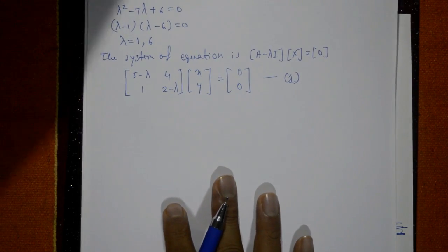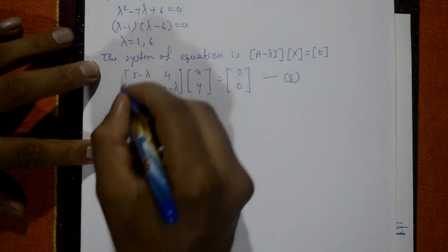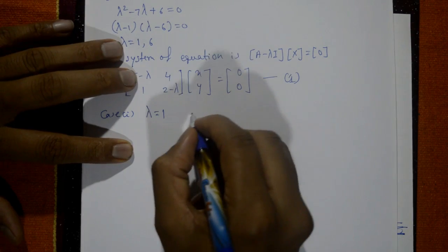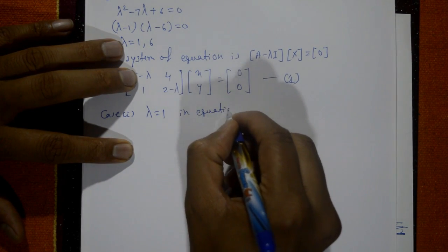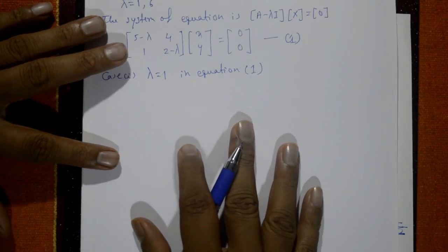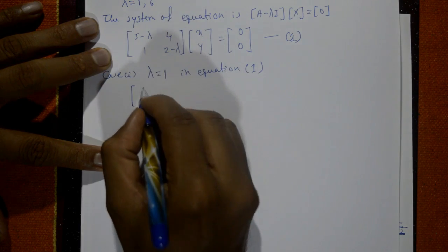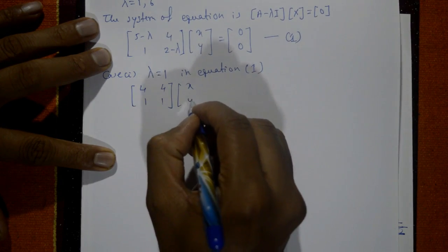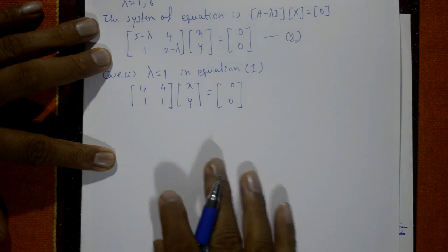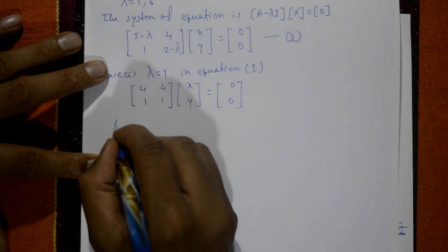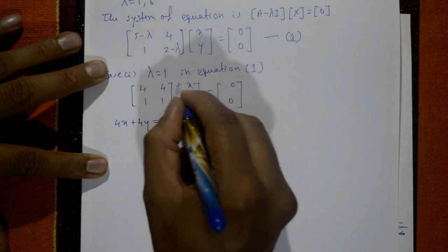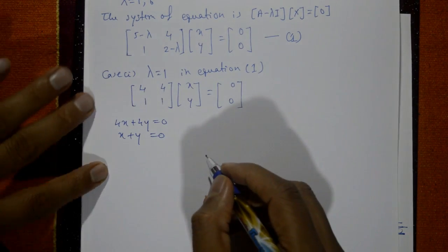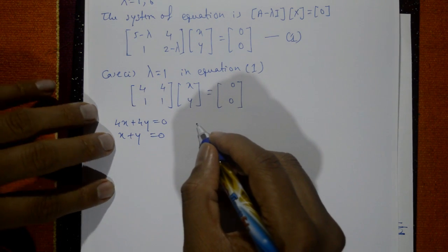These are the eigenvalues. Now we find the eigenvectors. Case 1: put λ = 1 in equation number 1. Substituting λ = 1 gives the matrix [[4, 4], [1, 1]] times [x, y] = [0, 0]. So we get: 4x + 4y = 0 and x + y = 0.